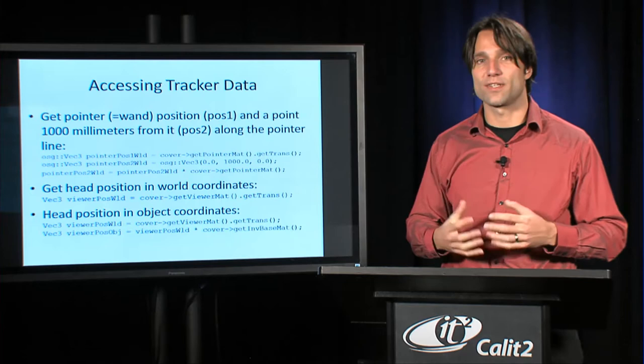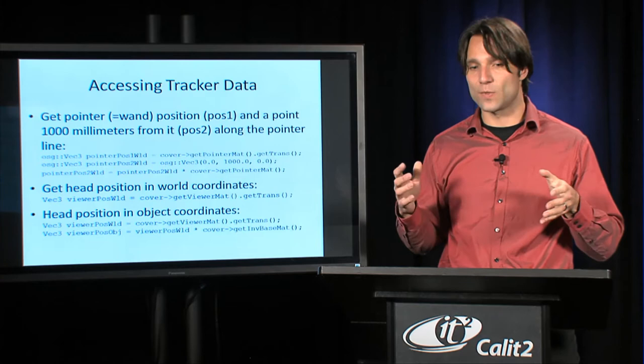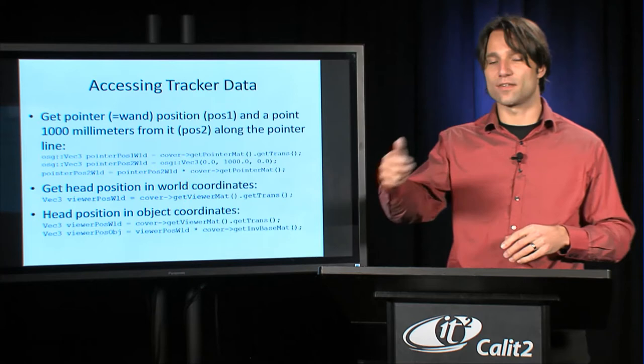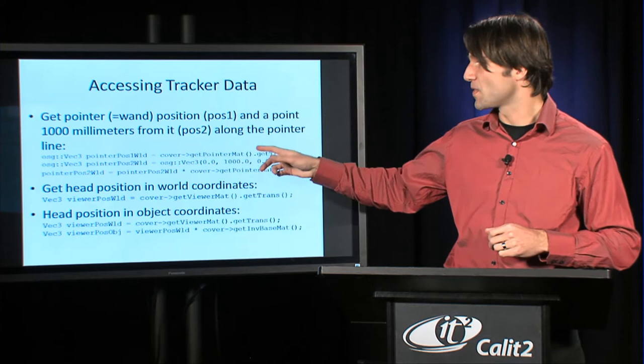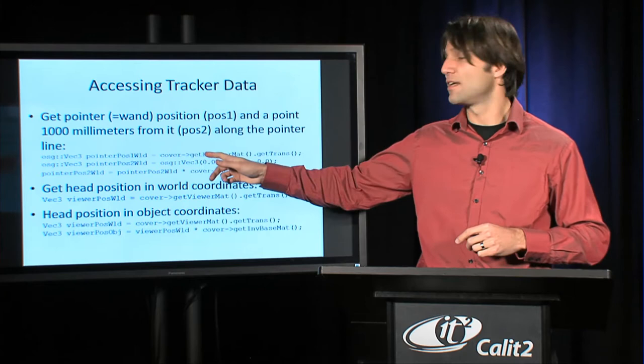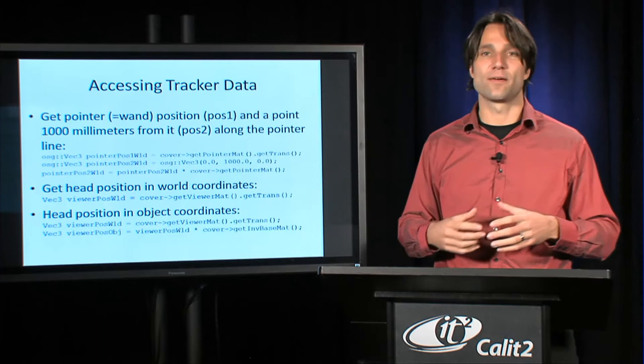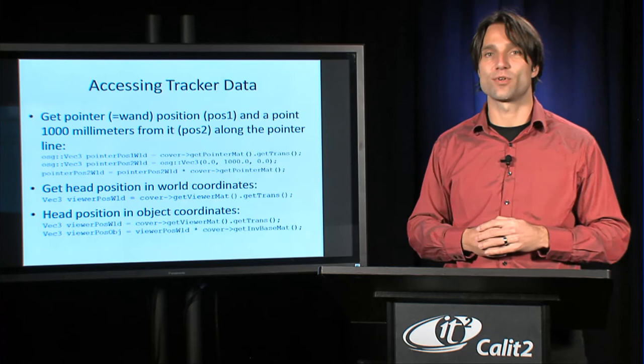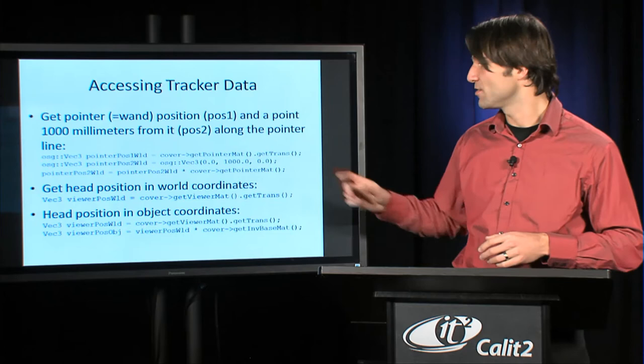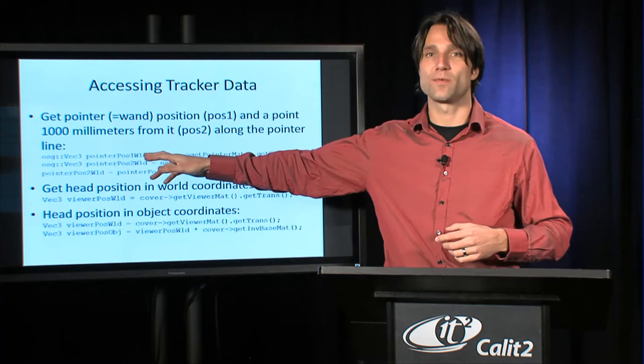The next quick topic is how you can access tracker data. This is for when your application is running, you want to position something somewhere perhaps, and you need to know where the hand is located or where the head is located if whatever you position is related to the head. This slide summarizes how to do that. The most important one here is the cover->getPointerMat.getTrans, or the getPointerMat by itself, that gets you the matrix for the wand. The pointer mat is a 4x4 matrix. If we also call getTrans on it, that gets us the translational component. So in this case, we only get the position. We don't care about the orientation. If we cared about the orientation, we would have to call it without the getTrans.